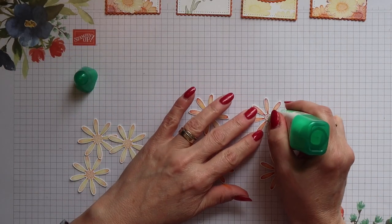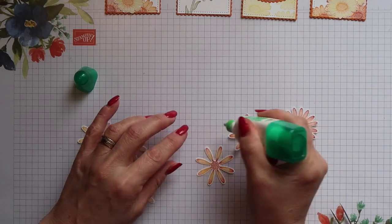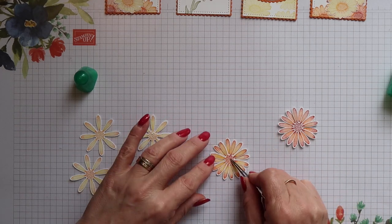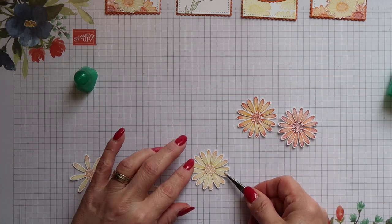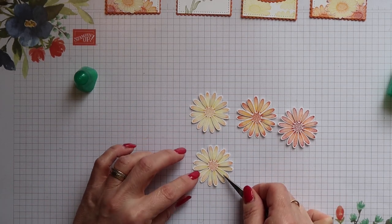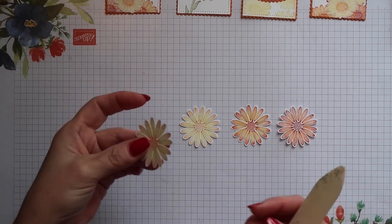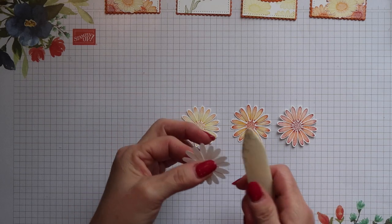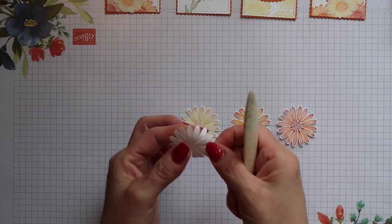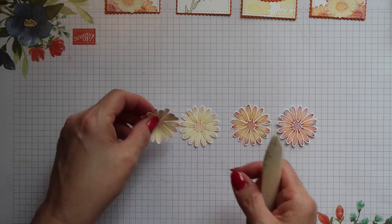All the remaining daisies need to be prepared for the front of the card and this is just a case of stacking them on top of each other in pairs and then we're going to shape them. To shape them you need to hold them between your thumb and forefinger in the middle, this supports the petals. Then using your bone folder you will run each of the petals between your other thumb and the bone folder and this will curve the petals upwards just slightly.